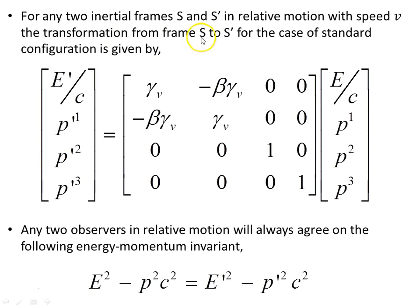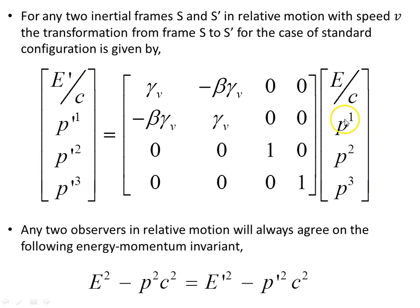If the two frames S and S prime are in relative motion with speed v, then we use the Lorentz transformation to relate them. The observer in S has one momentum 4-vector, the observer in S prime has another, related via the Lorentz transformation matrix for standard configuration. Any two observers in relative motion will always agree on the energy-momentum invariant.